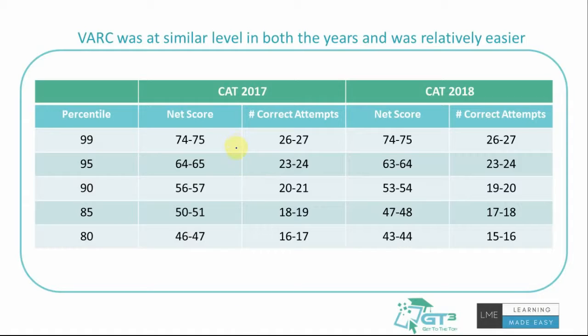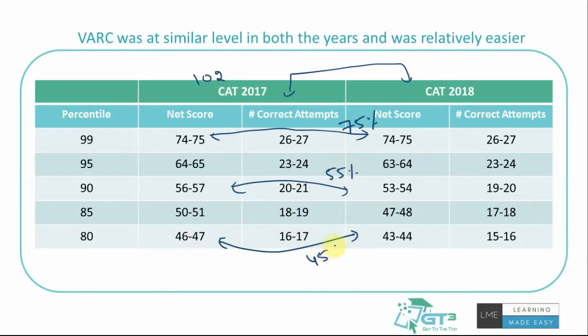So the logic or the idea we need to derive in this part is this: Last two years, the CAT paper is relatively looking easier on the VARC out of all sections. Out of 102 marks, the expected score to get 99 percentile is around 74-75, that is approximately 75 percentage. 90 percentile is expecting you to have around 55 percentage and 80 percentile is looking at 45 percentage. So this is what we are expecting based on recent pattern assuming the difficulty being the same.